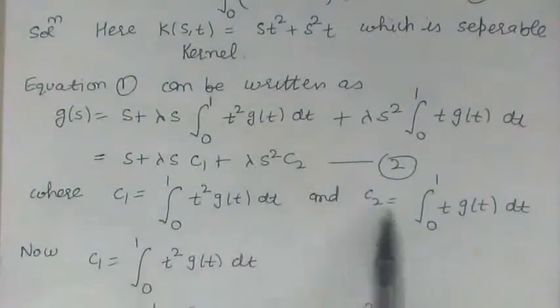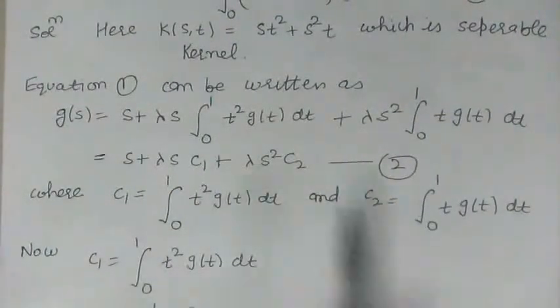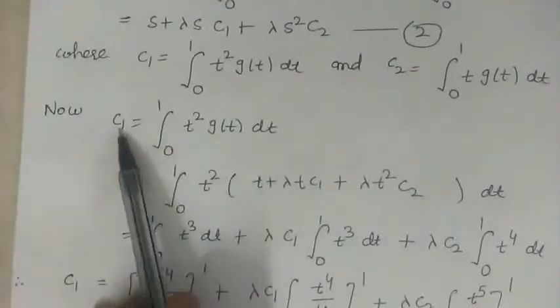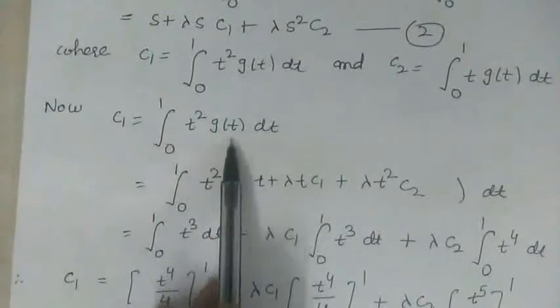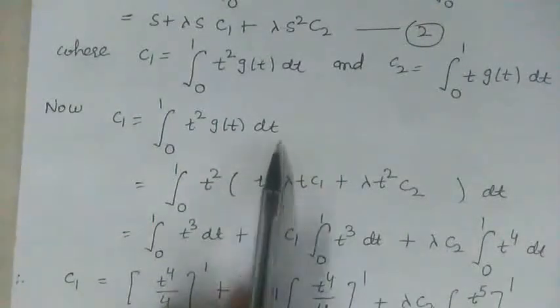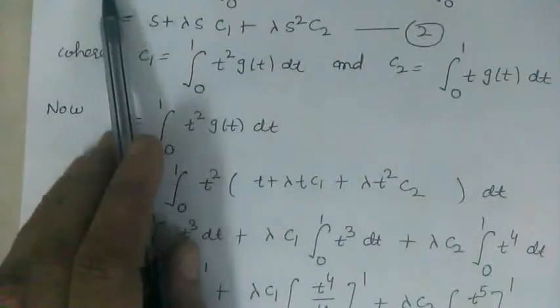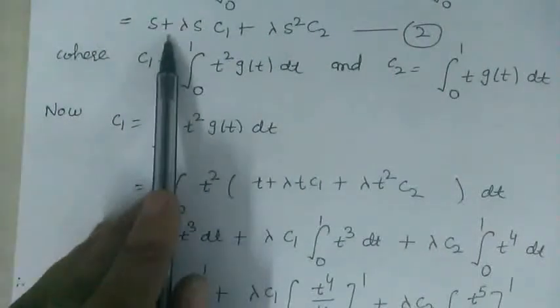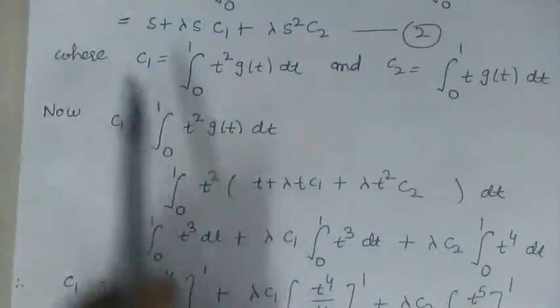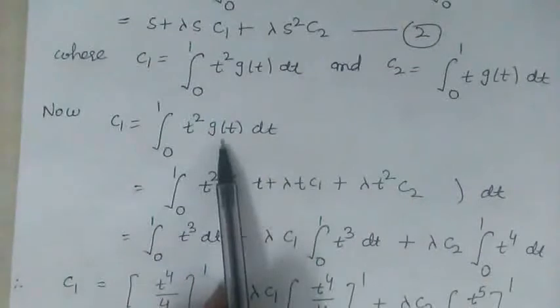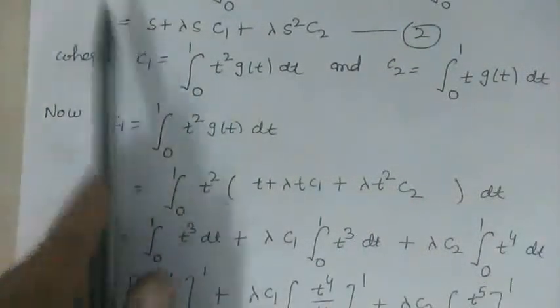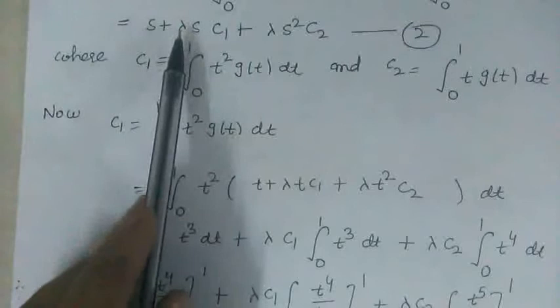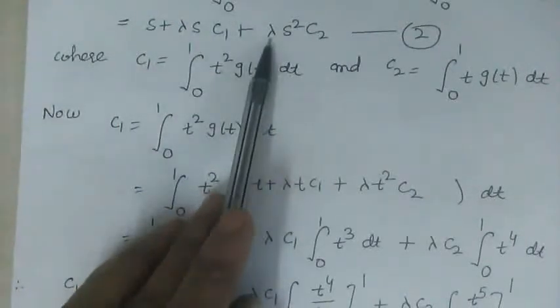Now let us consider c₁ and c₂ one by one. First, c₁ = ∫₀¹ t² g(t) dt. From equation 2, by replacing s with t, we can find the value of g(t). So g(t) = t + λt c₁ + λt² c₂.